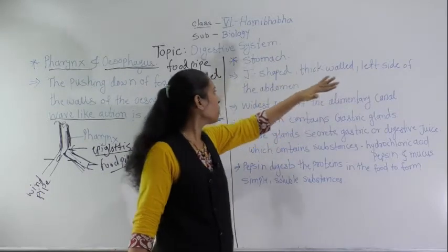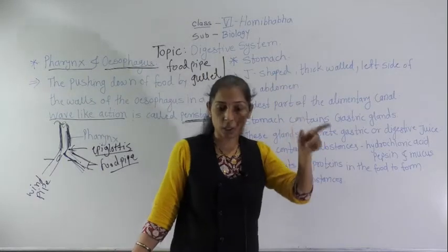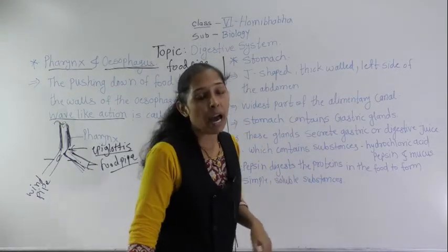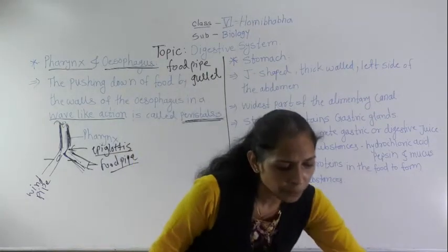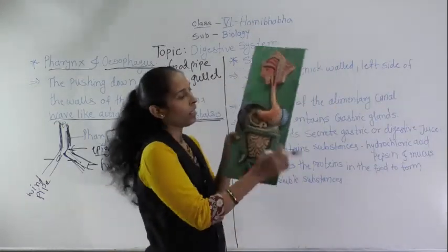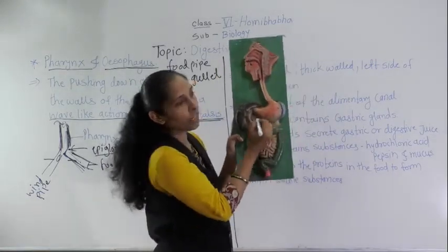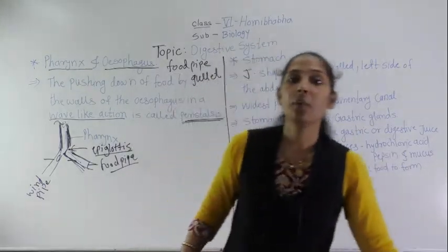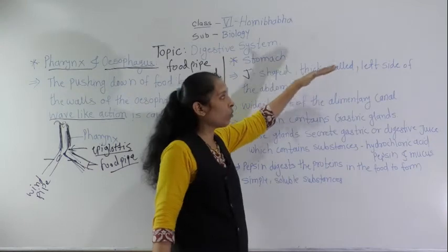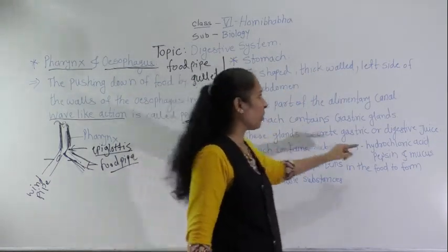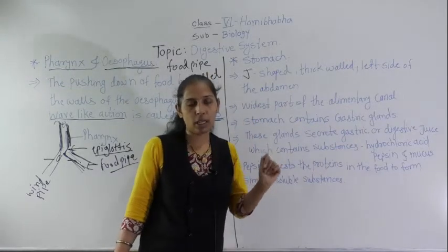The stomach is a J-shaped organ with thick walls, situated to the left side of the abdomen. The shape of the stomach is like the letter J, and its walls are very thick.